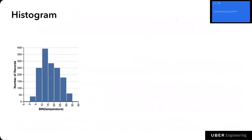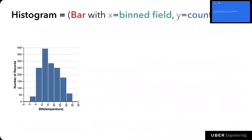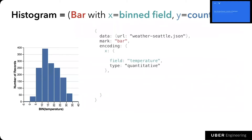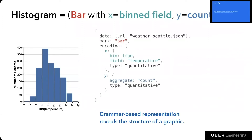Let's see some examples of how VegaLite provides building blocks to create charts — I'll use a histogram as an example. A histogram is essentially bar marks with x-position encoding a binned field, and the y-position encoding count values within each bin. VegaLite provides a JSON syntax to define this structure: you describe the data from a URL, set the graphical mark type to bar, define encoding mappings between data fields and visual properties like x and y, where temperature is mapped to x. You can also define transformations like binning within the encoding, and finally map aggregated count to the y-axis, giving a representation that reveals the underlying structure of a histogram.